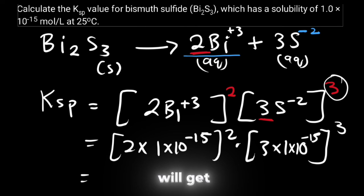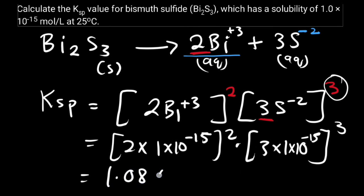Now when we calculate this we will get 1.08 times 10 power negative 73 and the unit here will be mole squared per liter squared.